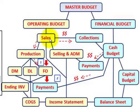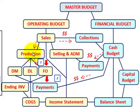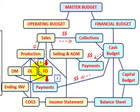Under our operating budget, we first determine our sales budget and the sales units we have to sell. Based on that, we determine our production budget — how many units we have to produce. Under the production budget, we determine our factory overhead, along with our direct materials budget, direct labor budget, and factory overhead budget.